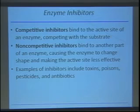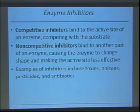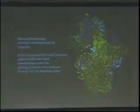Uncompetitive inhibitors are a sort of extreme example, where we have a molecule that only binds to the enzyme-substrate complex. When that happens, it forms an inactive complex with the enzyme-substrate complex such that it can't carry out chemistry.